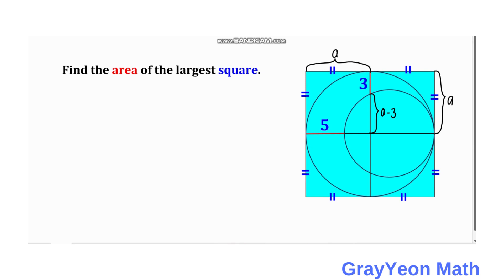And if that is a, then this should be a minus 5. A minus 5, and this is a. And this should be a minus 3 also, because this is actually 3 because of the symmetry of the circle. So this is 3.